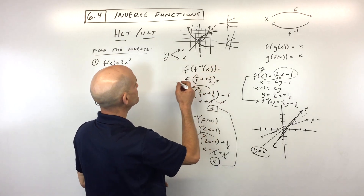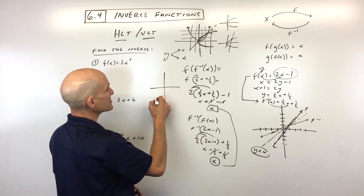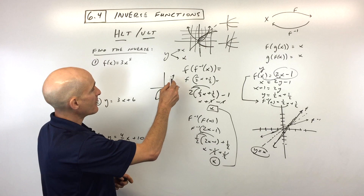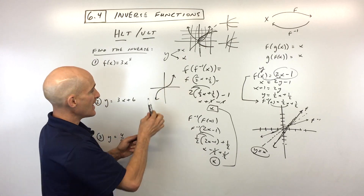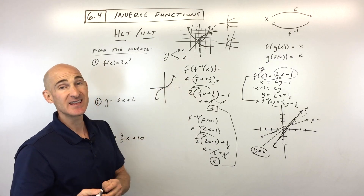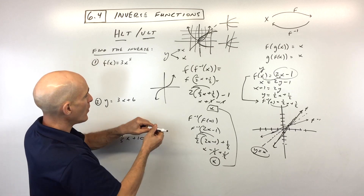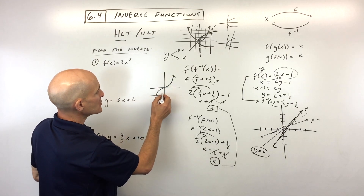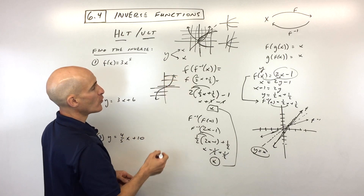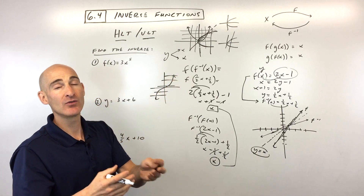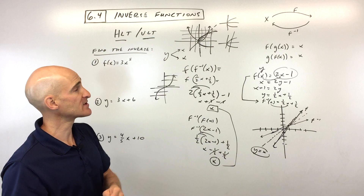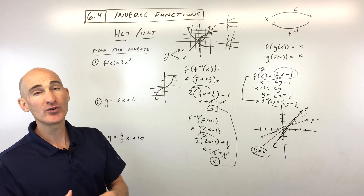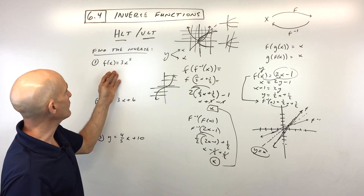Let me show you another example. Say if your graph looked like this — is this graph a function? Yes, it passes the vertical line test. Is the inverse of this graph a function? We use the horizontal line test, and you can see nowhere does it cross the graph more than once. So that means the inverse of this graph would also be a function. That's the horizontal line test in action.